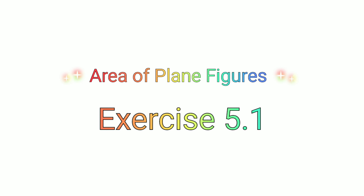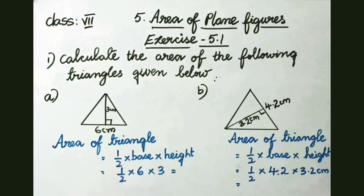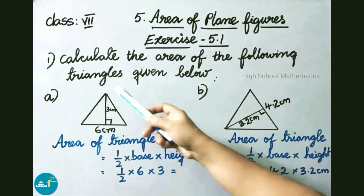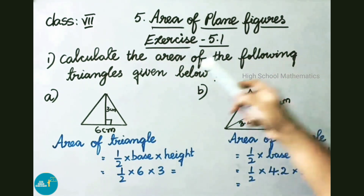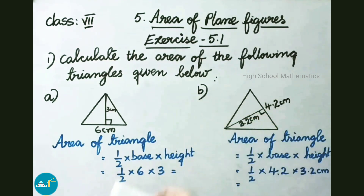Hello everyone, welcome to the high school mathematics channel. Today we are going to learn class 7 chapter 5, area of plane figures, exercise 5.1. See now question number 1: calculate the area of the following triangles given below.